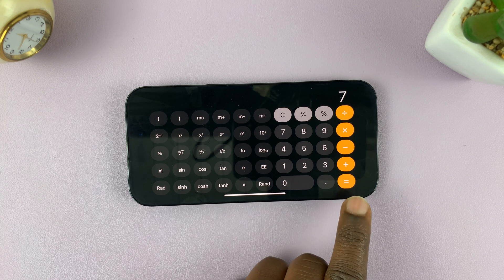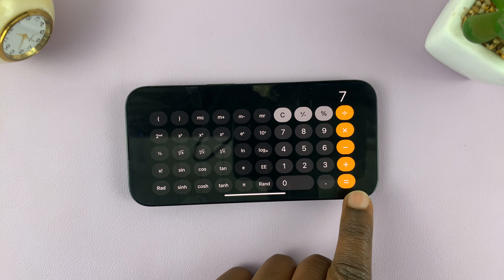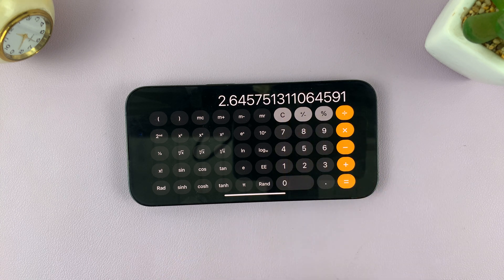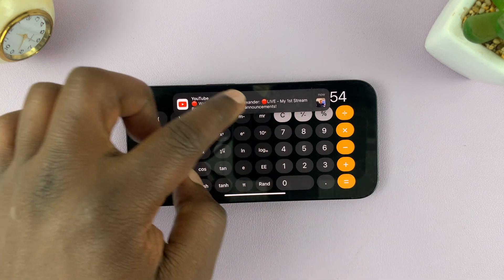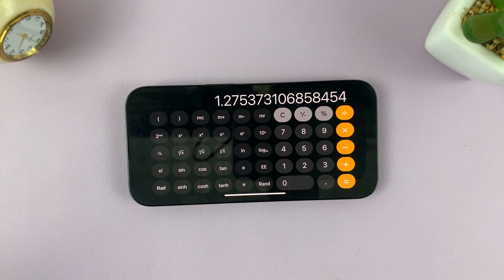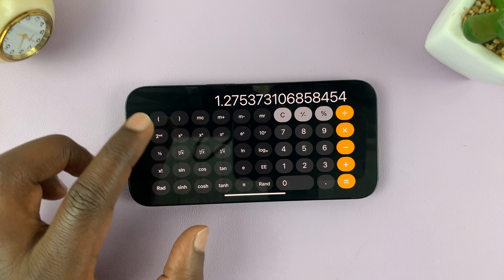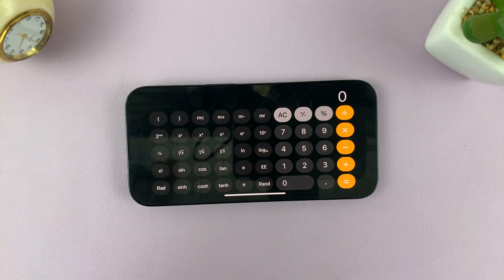So make sure you tap on the equal sign once, because if you tap on it again, it's going to give you the square root of the answer, and then the square root of that answer, and it's a never ending loop. So make sure you tap on the equal sign just once.